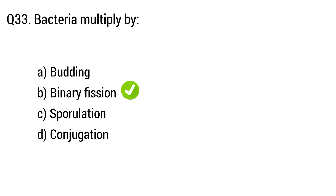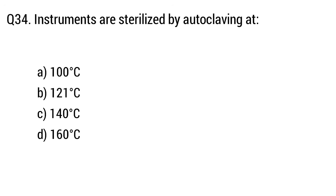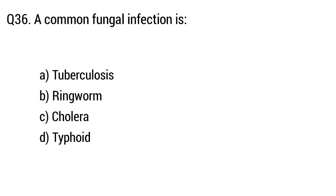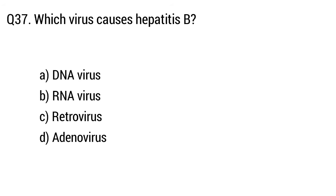Question 33: Bacteria multiply by? The right answer is option B, binary fission. Question 34: Instruments are sterilized by autoclaving at? The right answer is option B, 121 degrees Celsius. Question 35: Causative agent of cholera? The right answer is Vibrio cholerae. Question 36: A common fungal infection is? The right answer is option B, ringworm.